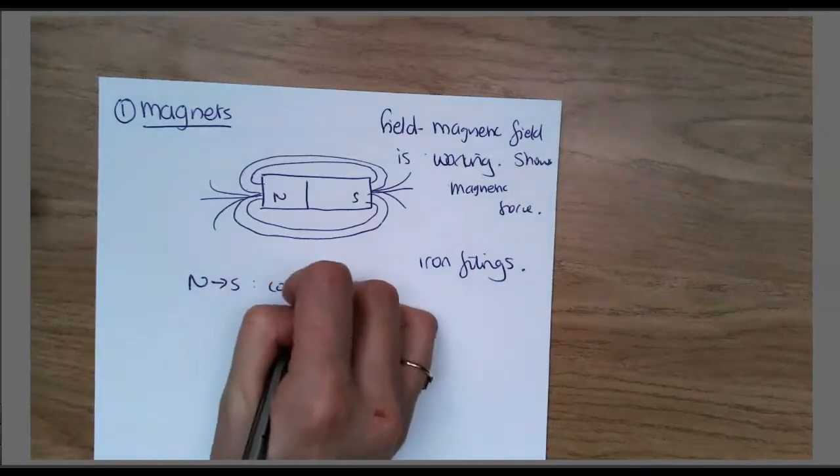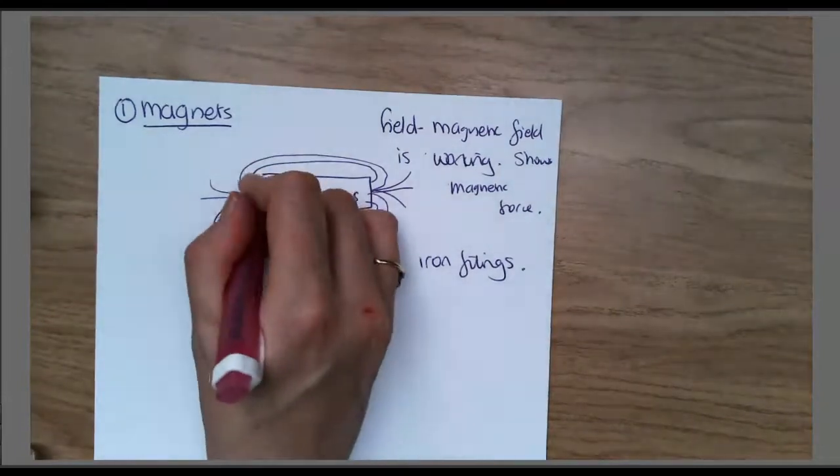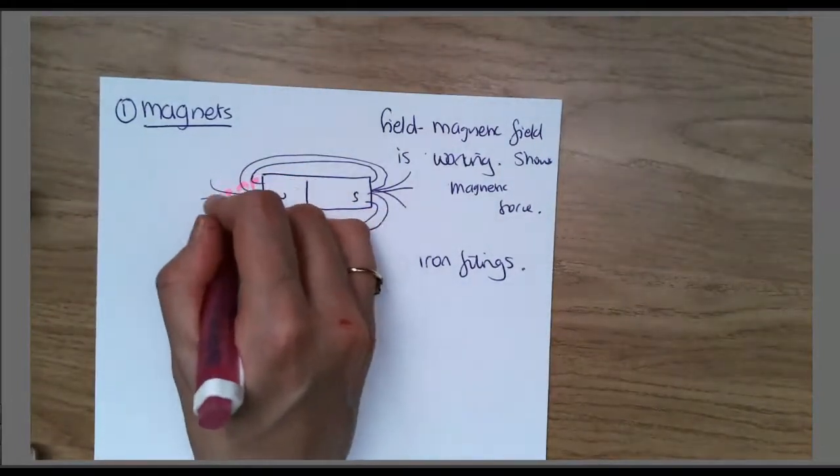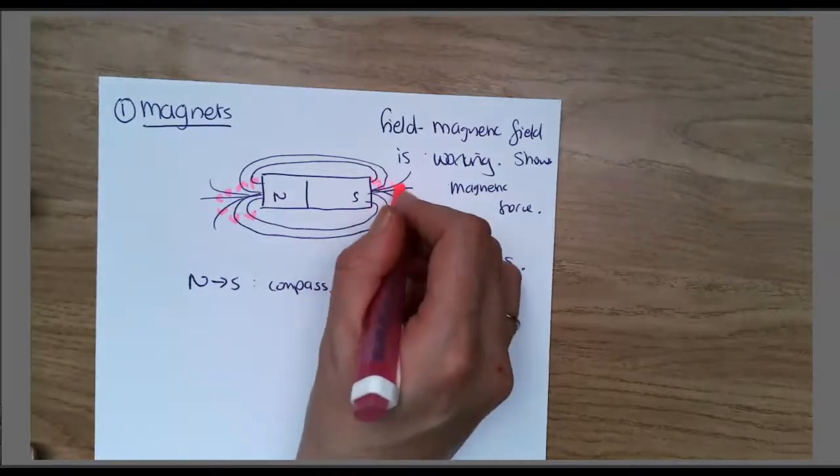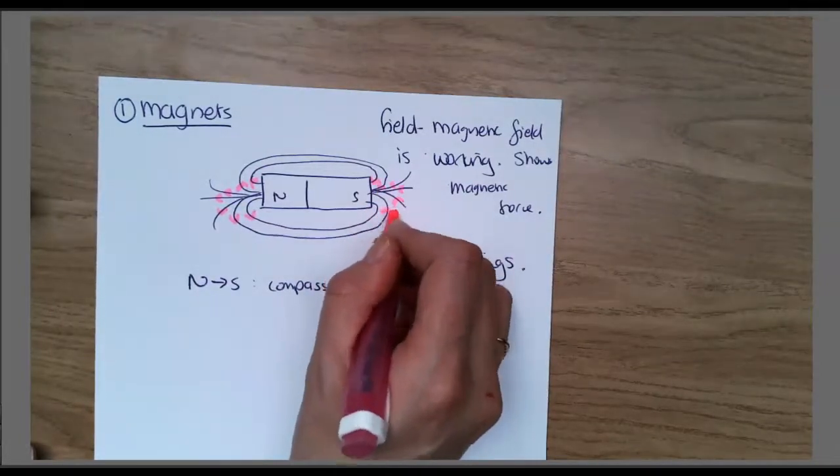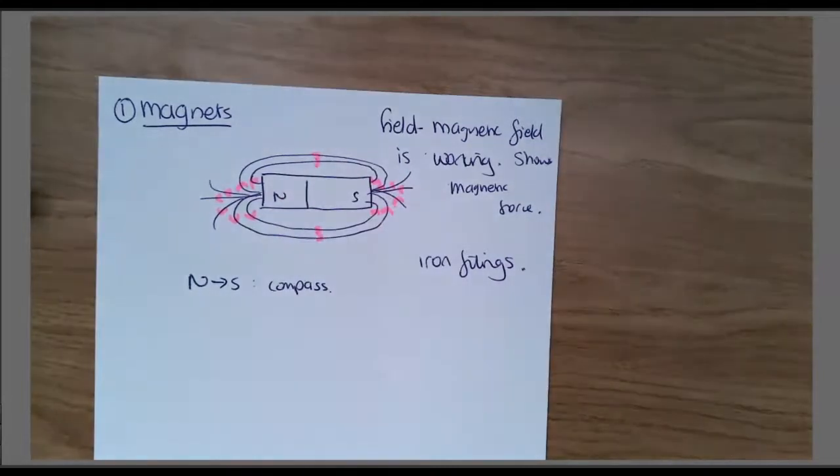What we figured out was that the field lines went from north to south. You can use a compass to do that. The field lines come out of the north and they go into the south, and in between they go round.